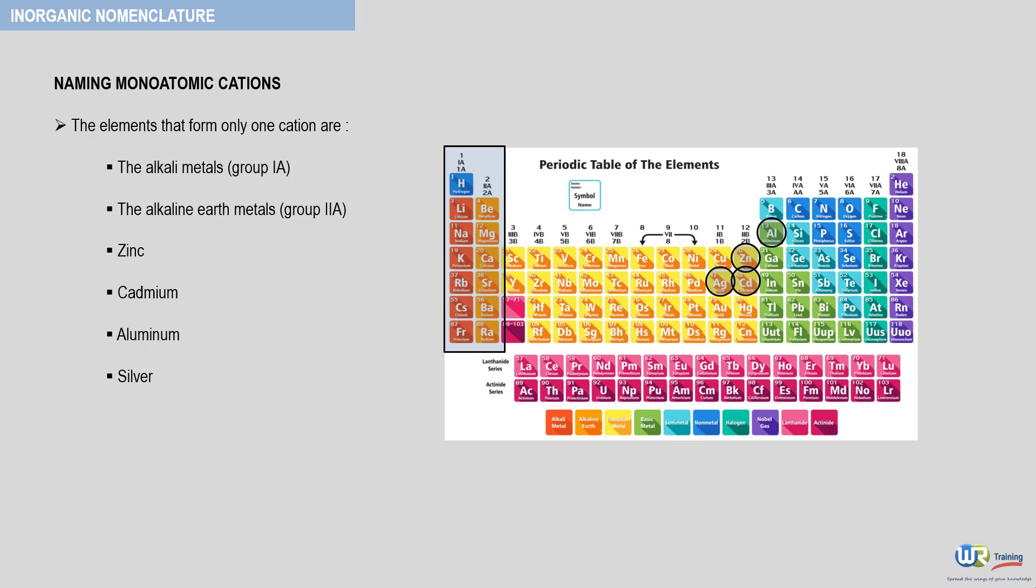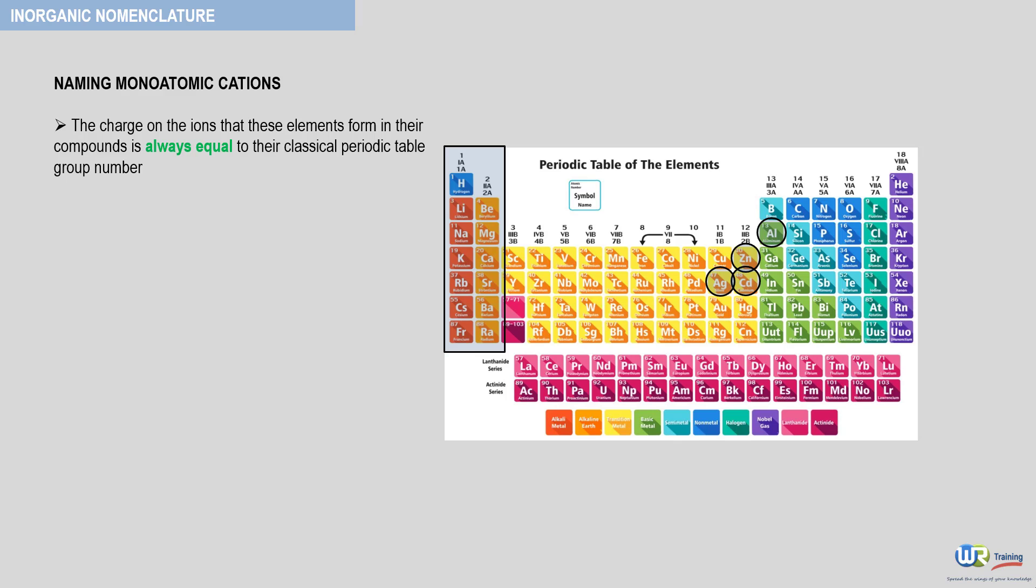The charge on the ions that these elements form in their compounds is always equal to their classical periodic table group number.